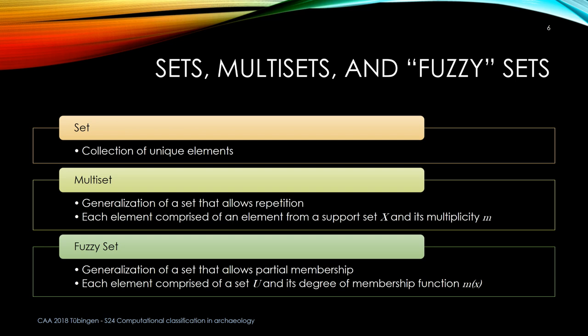This was recognized as a problem back in the 19th century by mathematicians who realized what we actually have to deal with is something called a multi-set. A multi-set is a generalization of the concept of a set, except that you not only have the unique element but a multiplicity of that element — basically a way to use the same set concepts like Venn diagrams, unions, and intersections, but with repetitive elements.